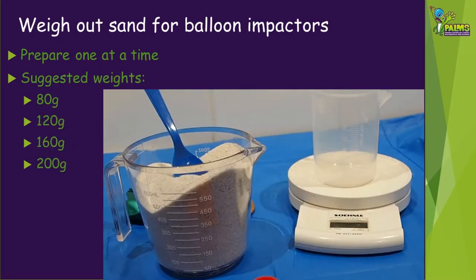The first thing we need to do is to make our impactors. To do this we're going to weigh out set amounts of sand then put the sand into the balloons. We've made four impactors with 80, 120, 160 and 200 grams of sand.